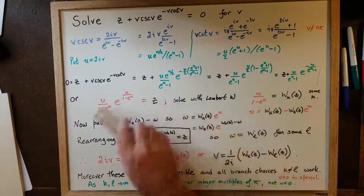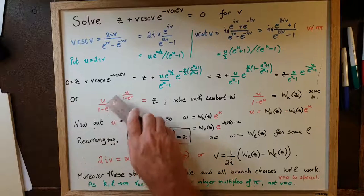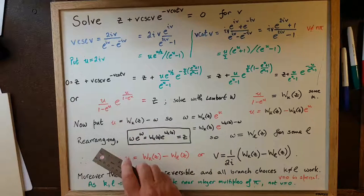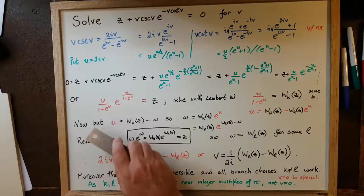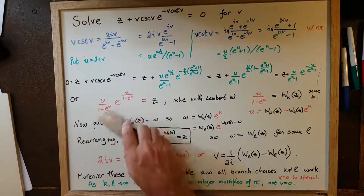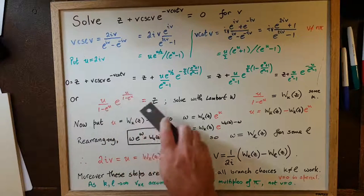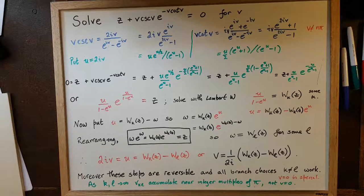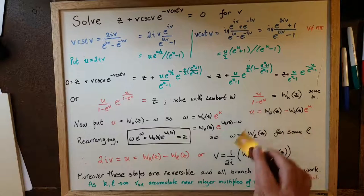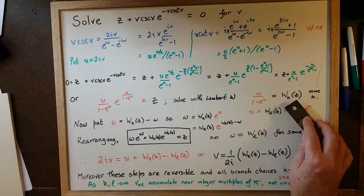We take the simplified term to the left-hand side, changing its sign to negative. Replacing the minus e to the u minus 1 with 1 minus e to the u in both places, we now have something times e to the something equals z. We know how to solve this: using the Lambert W function. Therefore, u over 1 minus e to the u equals W_k of z, for some branch k.